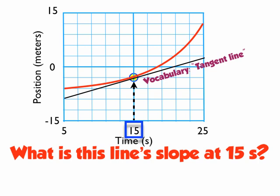So why is this line so invaluable? Well, we're going to find the slope of this tangent line, and that's going to be the slope of the curve at 15 seconds. And here's why.